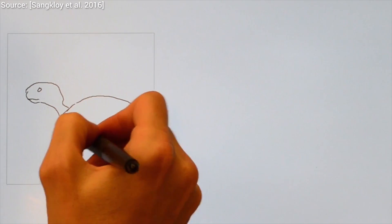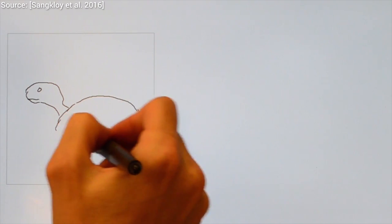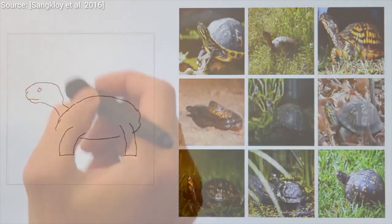The learning happens by showing a deep convolutional neural network pairs of photographs and sketches. If you are not familiar with these networks, we have some links for you in the video description box.